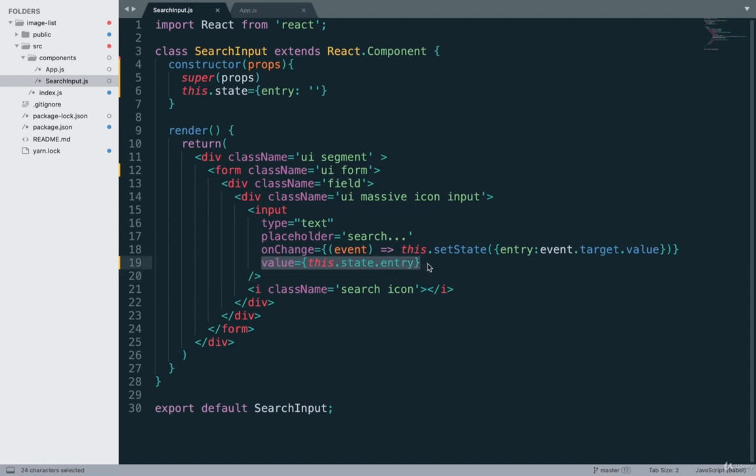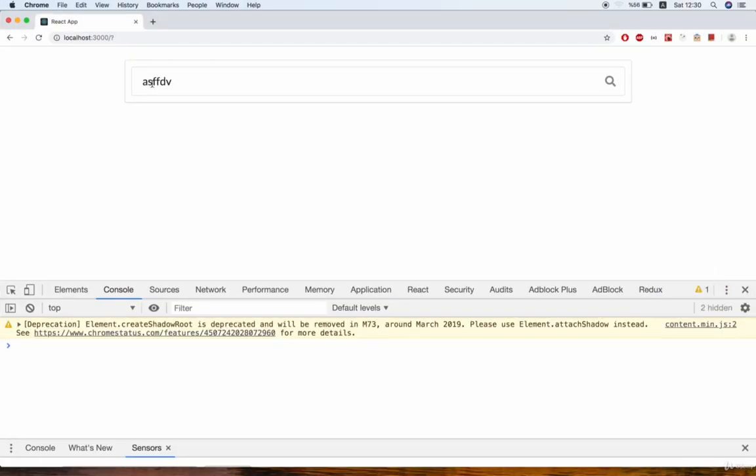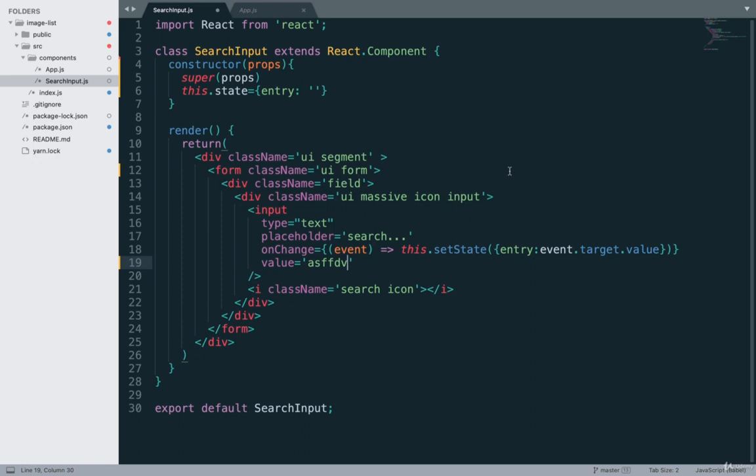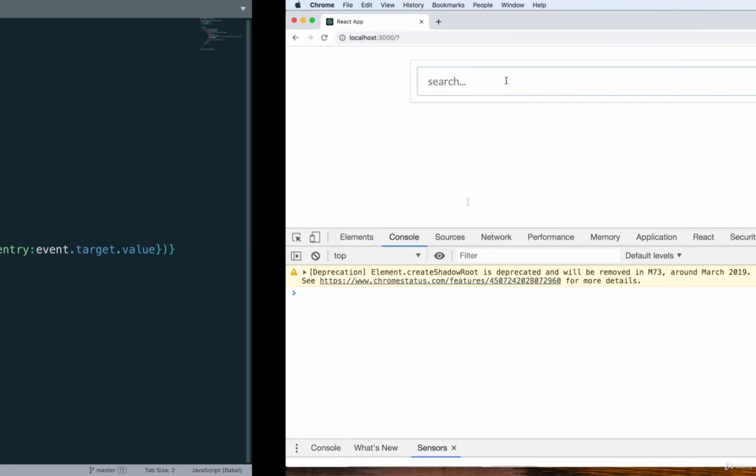The value prop right there is going to essentially overwrite whatever text is already inside of the input. So now let me just demonstrate that to you pretty easily. So I'll change it to some random text, save it and I'll flip back over to the browser and you'll see that my text input right here now has all of whatever that was that I just typed in.